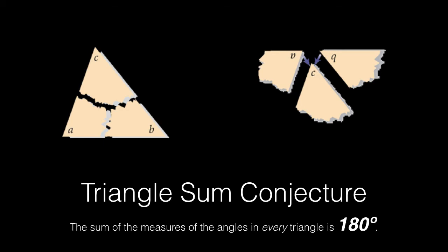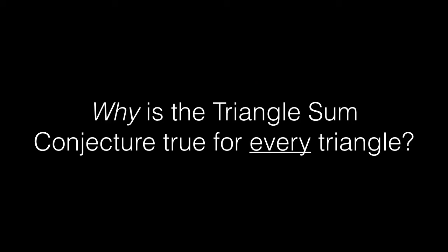So the triangle sum conjecture says that the sum of the measures of the angles in every triangle is 180 degrees. So why? Why is this true? Let me do a quick demo.